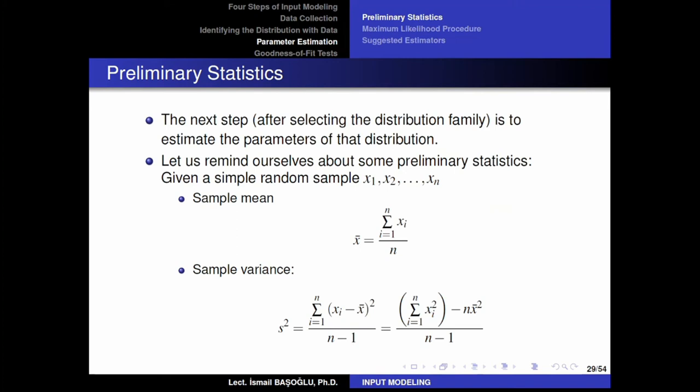If your data comes from an exponential distribution, the next question is: what would be the rate parameter, what is the lambda value? Or if your data comes from a normal distribution, the next question is: what is the location parameter mu and the variance parameter sigma squared? In order to answer such questions, I'm going to go over a little theory on maximum likelihood estimation.